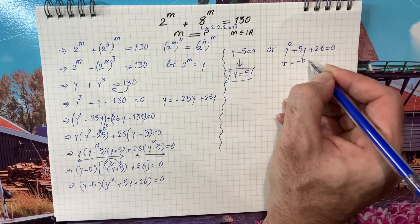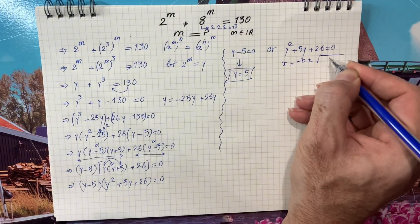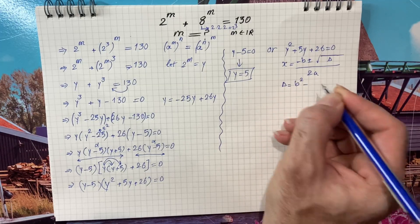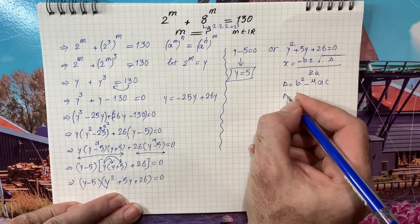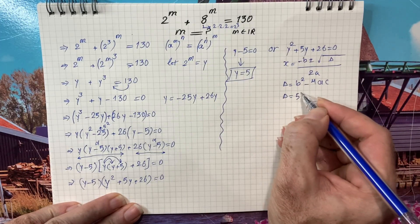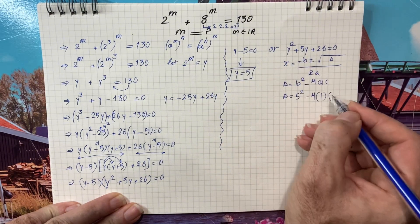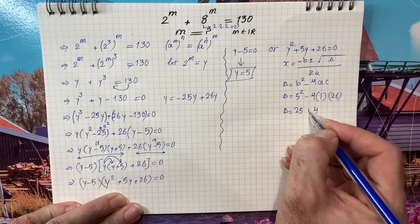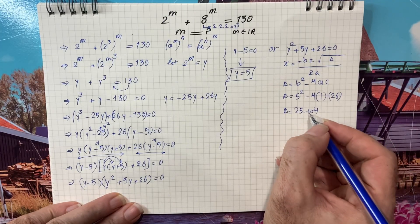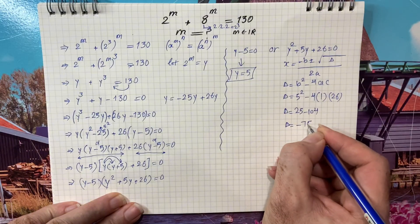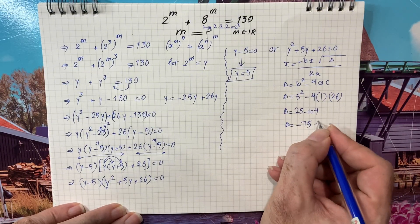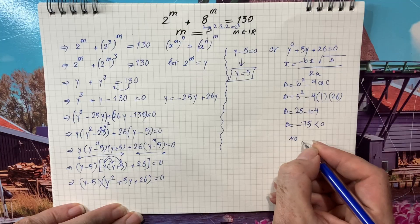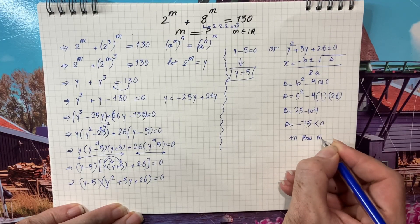For the quadratic y squared plus 5y plus 26 equals 0, I'll use the quadratic formula. Delta equals b squared minus 4ac, so delta equals 5 squared minus 4 times 1 times 26, which is 25 minus 104, giving delta equals negative 79. Since the value of delta is negative, there is no real root for this equation.